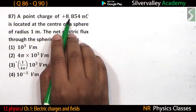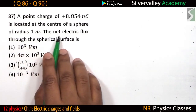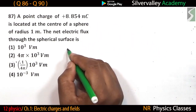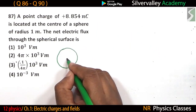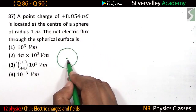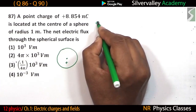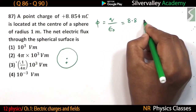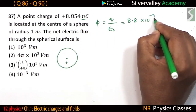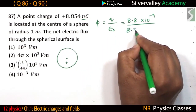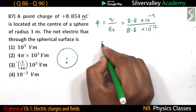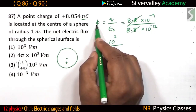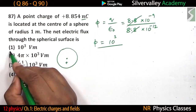A point charge is located at the center of a sphere. The net electric flux through the spherical surface: flux equals total charge divided by epsilon naught. The charge is 8.8-something times 10 to the power of minus 9, and epsilon naught is 8.85 times 10 to the power of minus 12. This ratio gives 10 to the power of 3, so flux equals 10 cubed in the appropriate SI units.